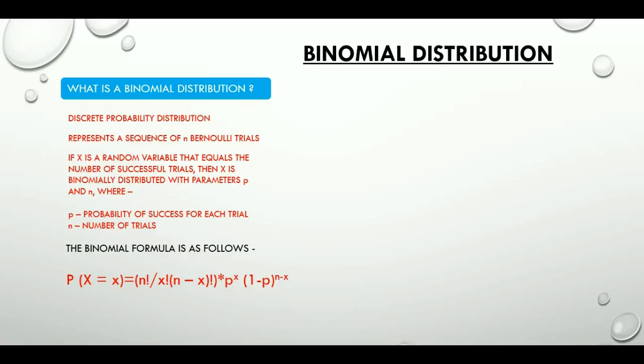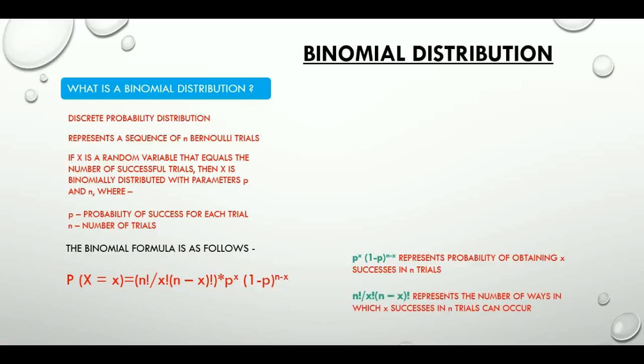The part of the formula which reads p^x, multiplied by (1-p)^(n-x), represents the probability of obtaining x successes in n trials. The other part of the formula — which is n factorial divided by x factorial multiplied by (n-x) factorial — represents the number of ways in which x successes in n trials can occur.